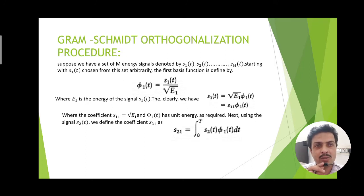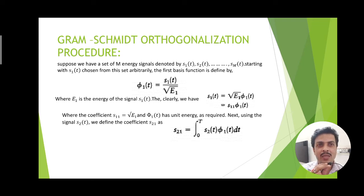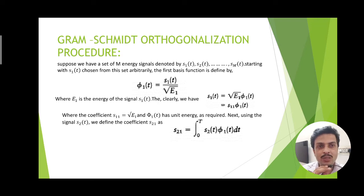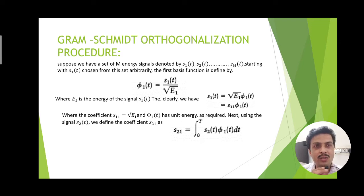The Gram-Schmidt orthogonalization procedure is a mathematical tool used for graphical representation of signals over axes represented by basis functions. This is important because representing symbols graphically on the basis function axes clarifies how much noise may contaminate a particular symbol and what the resultant received magnitude will be. Such mathematical calculation is simplified by following the Gram-Schmidt orthogonalization procedure. Here we consider M number of energy signals s1(t), s2(t), up to sM(t), depending on M number of symbols.